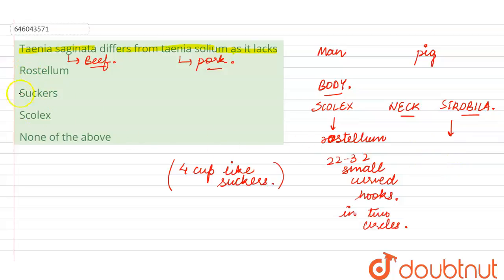Now, talking about Taenia saginata, which is a beef tapeworm. In this case, the body is divided into scolex, neck and strobila. These three segments are same in case of the beef tapeworm also, but they do not have rostellum and hooks.